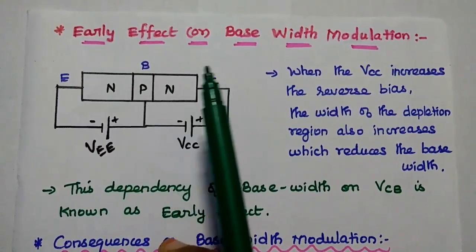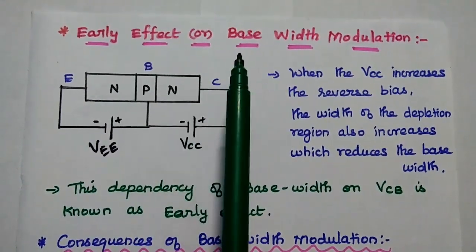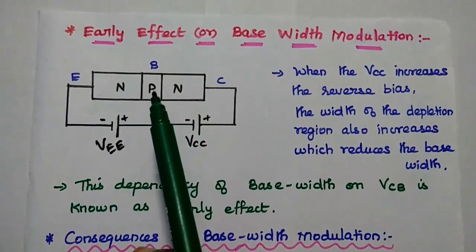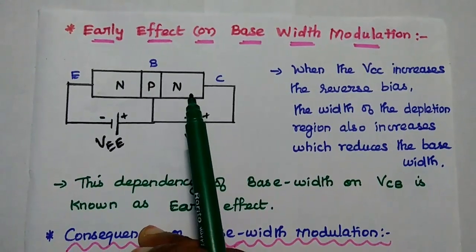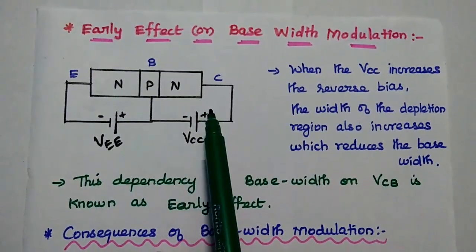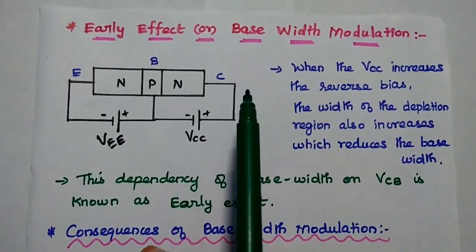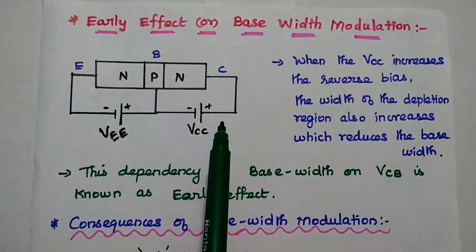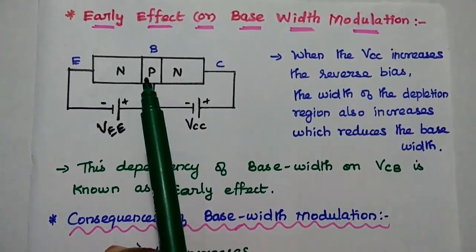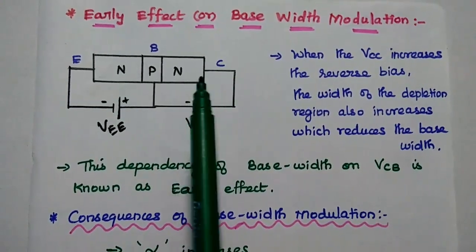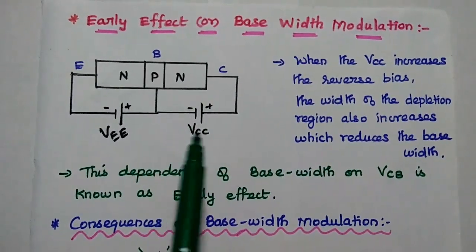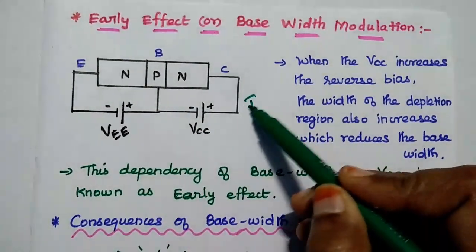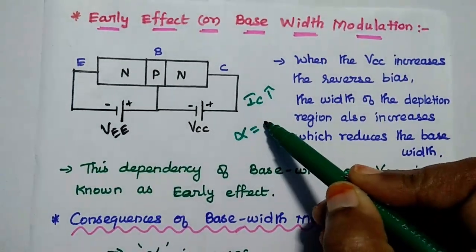An important characteristic of common base configuration is the Early effect, or base width modulation. When the reverse bias at the collector side is increased, the width of the base is reduced. A large number of electrons flow from emitter to collector rapidly, and the base width is reduced due to increasing collector voltage. Collector voltage is the reverse bias voltage. The dependency of base width on collector voltage is known as base width modulation.